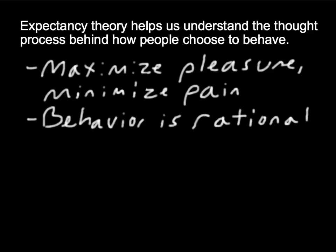There are a few key principles to get us started with expectancy theory. First, people want to maximize pleasure and minimize pain. Second, human behavior is rational. People's behavior results from conscious choices among alternatives that they weigh equally, and they have complete information about these alternatives. Furthermore, they choose the alternative that has the greatest force.